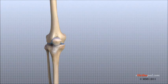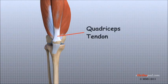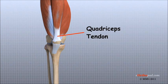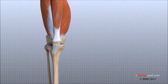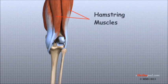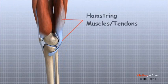Tendons are similar to ligaments, except that tendons attach muscles to bones. The quadriceps tendon connects the large quadriceps muscle of the thigh to the patella. This tendon continues across the patella, or kneecap, and blends into the patellar tendon, which connects the patella to the tibia. The hamstring muscles on the back of the thigh also have tendons that attach in different places around the knee joint, and these tendons are sometimes used as tendon grafts to replace torn ligaments.